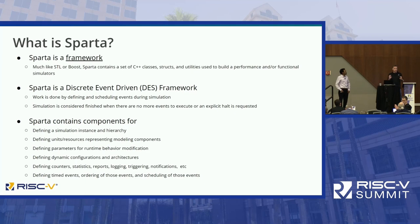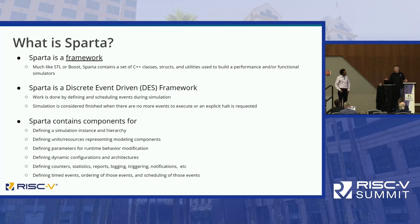You can grab any component within a Sparta modeling framework — say a decode block out of a core — put it in its own unit test, replace it with a more advanced decode block, and the rest of the framework doesn't change. To support this, Sparta provides parameters for runtime behavior applied on top of the topology you build, so those parameters dictate how each unit behaves.